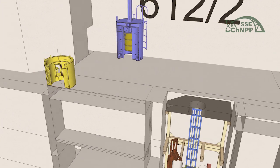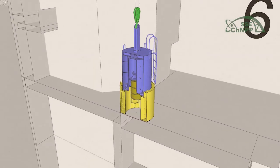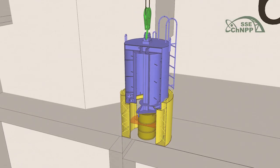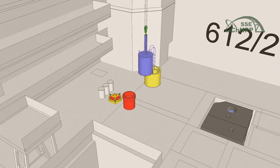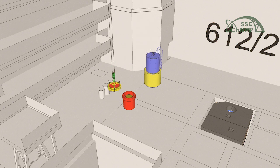The drums with radioactive waste pass through scanning at the final monitoring station, based on the results of which a passport is generated for each package. Then the packages are loaded into a transfer cask and leave the power unit through a transport corridor.